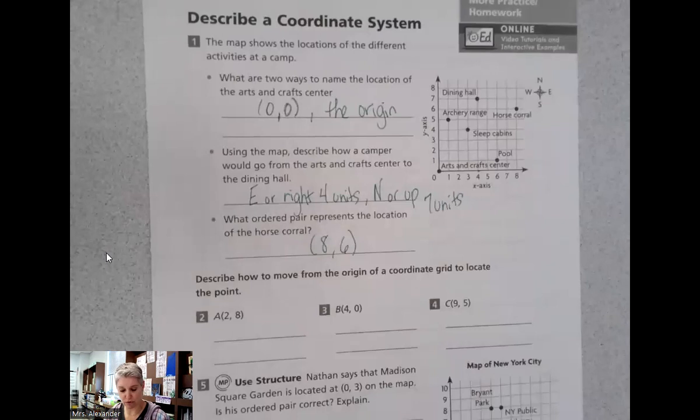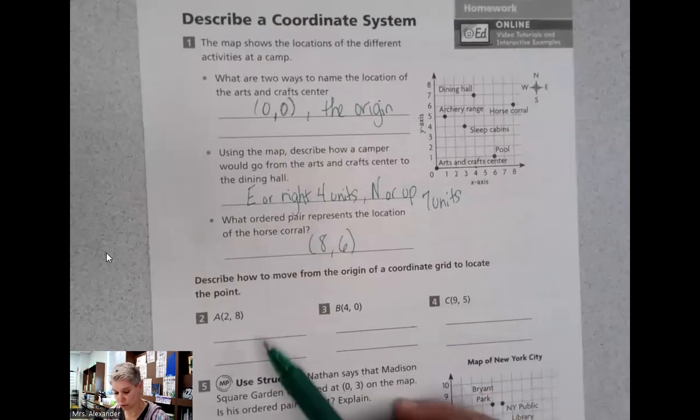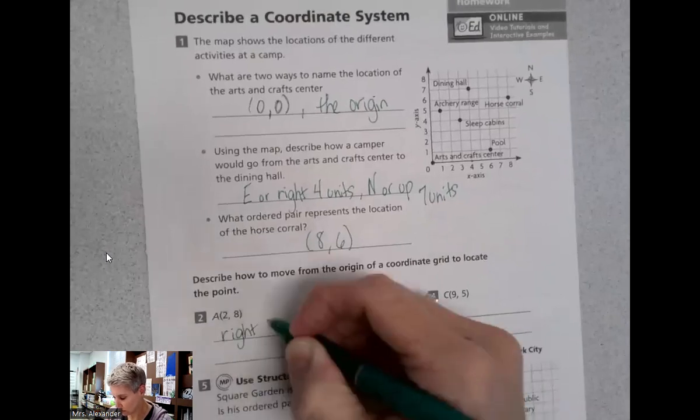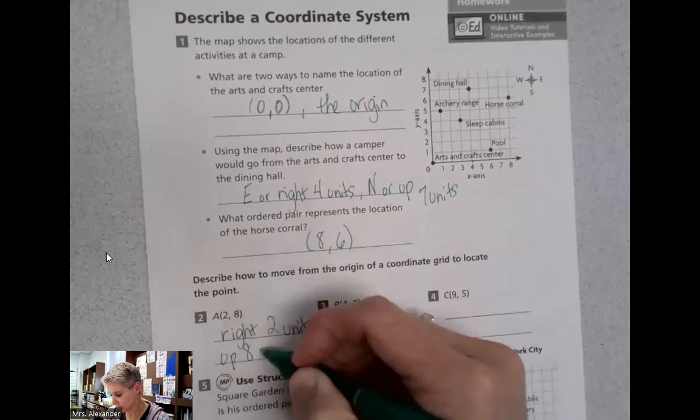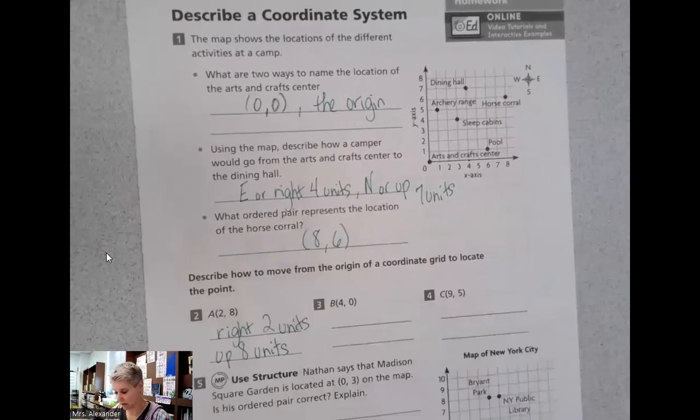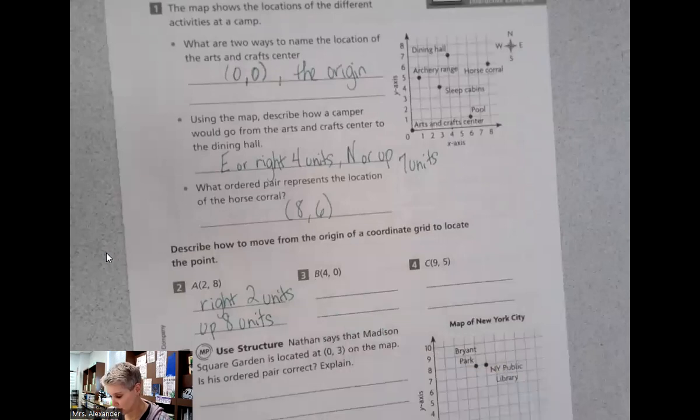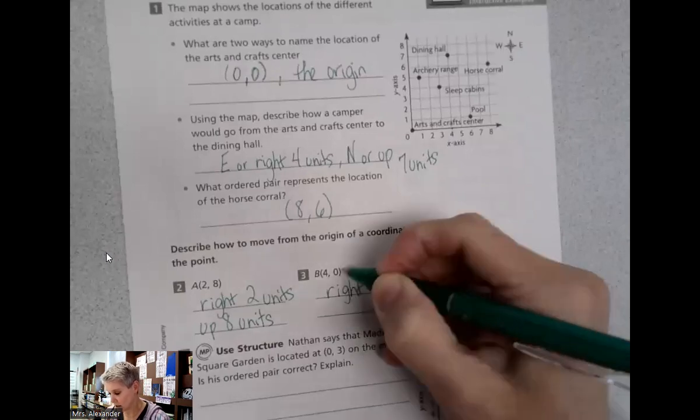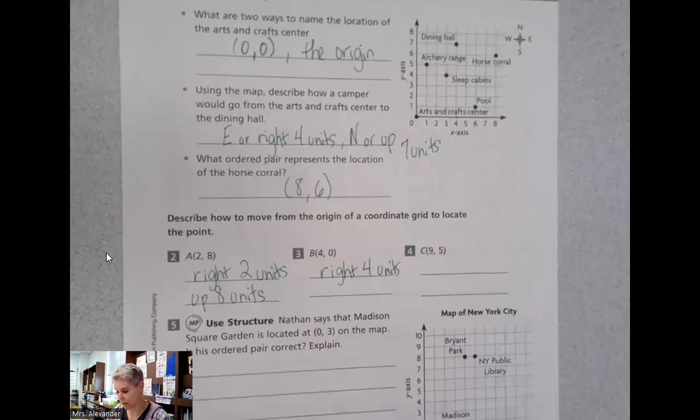Describe how to move from the origin of a coordinate grid to locate the point. So if we're locating point A at (2,8), we're going to go right two units and then up eight units. We always go over then up. For coordinate B at (4,0), we're just going to go right four units. We would not go up at all. That zero says stay right there. So over to the right four units and stay right there.